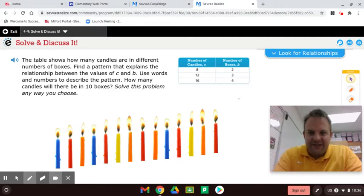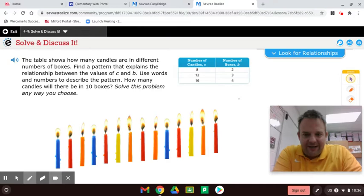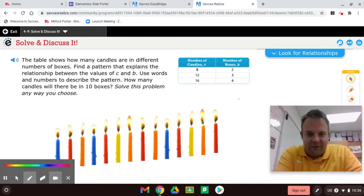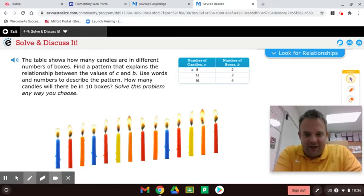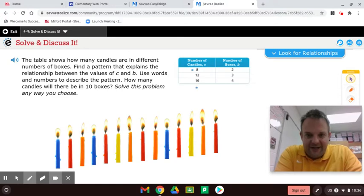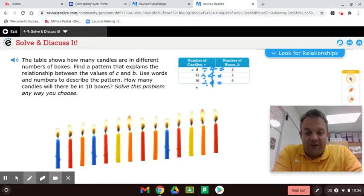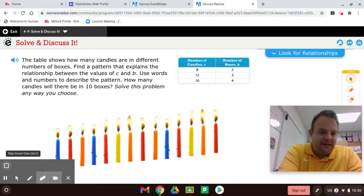I sort of see maybe the number of candles divided by what gives you the number of boxes. 8 divided by what is 2 and 12 divided by what is 3. What do you guys think? Here's what I got: 8 divided by 4 equals 2 and 12 divided by 4 equals 3 and 16 divided by 4 equals 4. So that means there's four candles in a box. We have a pattern here that you can see.